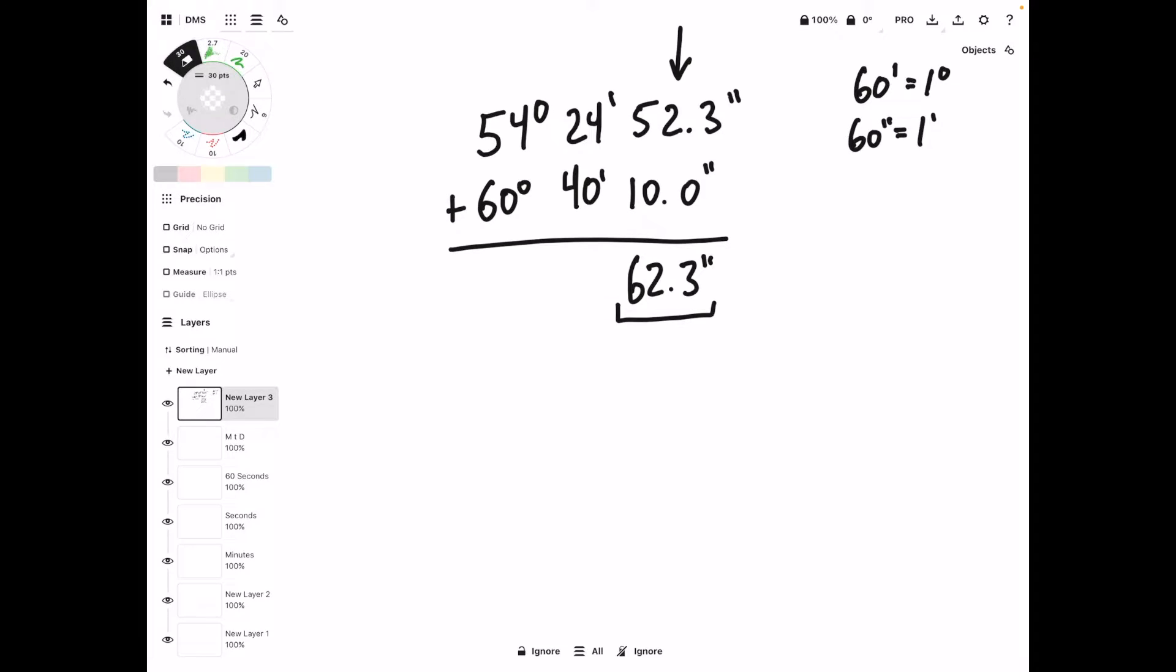So we can't leave this as 62 seconds. We can't leave it as more than 60, but at the end we will deal with it. Now we're going to slide over to the second column, the minutes column, and we'll add 24 plus 40. So that's going to give us 64 minutes.